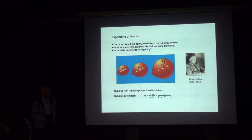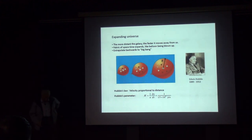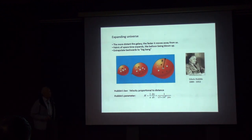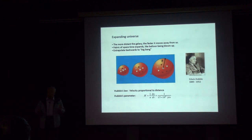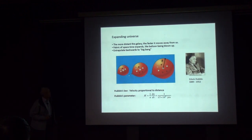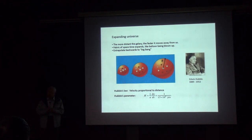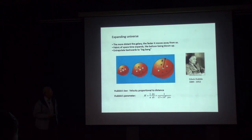We first need to discuss some background on dark energy. Hubble discovered that the universe is expanding — he observed that galaxies are moving away from each other, and the farther apart they are, the faster they move. It is like points on the surface of a balloon being blown up, where every point moves away from every other point at a speed proportional to the distance between them.